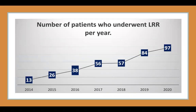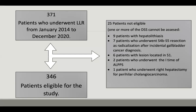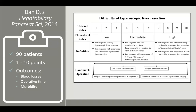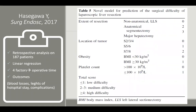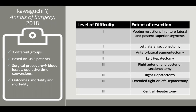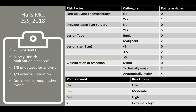This slide shows the evolution of the number of liver resections per year in our center. In the last few years, we performed 371 liver resections. 25 were not eligible for this study because the difficulty score could not be assessed, and 346 patients were eligible. We applied four difficulty scores: the IVARTE criteria published by BAN in 2014, the Azagawa score published in 2017, the Kawaguchi difficulty score published in Annals of Surgery in 2018, and the ALS score published in the British Journal of Surgery in 2018.